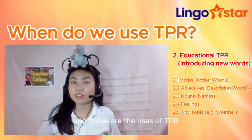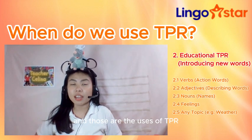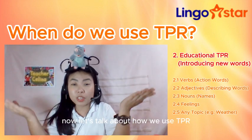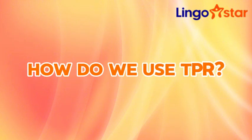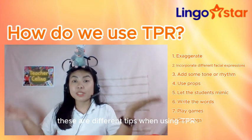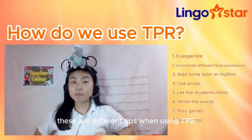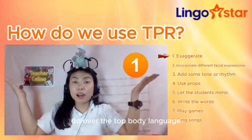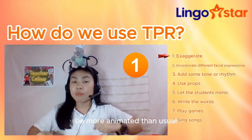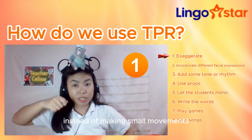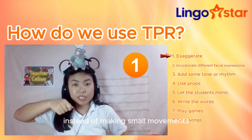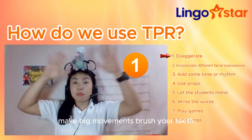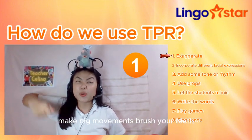And those are the uses of TPR. Now let's talk about how we use TPR. These are different tips when using TPR. First, exaggerate — do over-the-top body language. Be more animated than usual. Instead of making small movements, make big movements. Brush your teeth! Number two, incorporate different facial expressions.